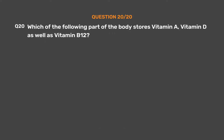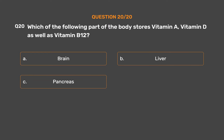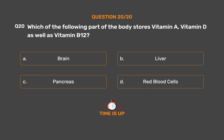Question No. 20. Which of the following parts of the body stores vitamin A, vitamin D, as well as vitamin B12? Option A: Brain. Option B: Liver. Option C: Pancreas. Option D: Red blood cells. The correct answer is Option B: Liver.